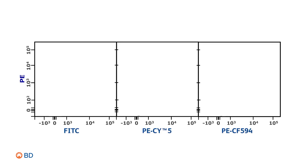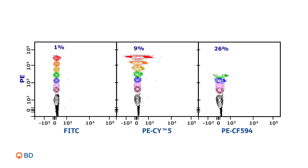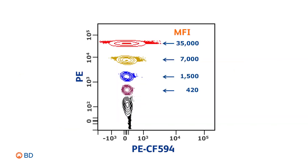The larger the fluorescence spillover, shown here from 1% to 26%, the greater the spread. Similarly, at any given PMT voltage, the antigen density and the fluorochrome brightness together determine the reagent brightness, measured as median fluorescence intensity, or MFI. As you can see, the higher the MFI, the greater the spread.